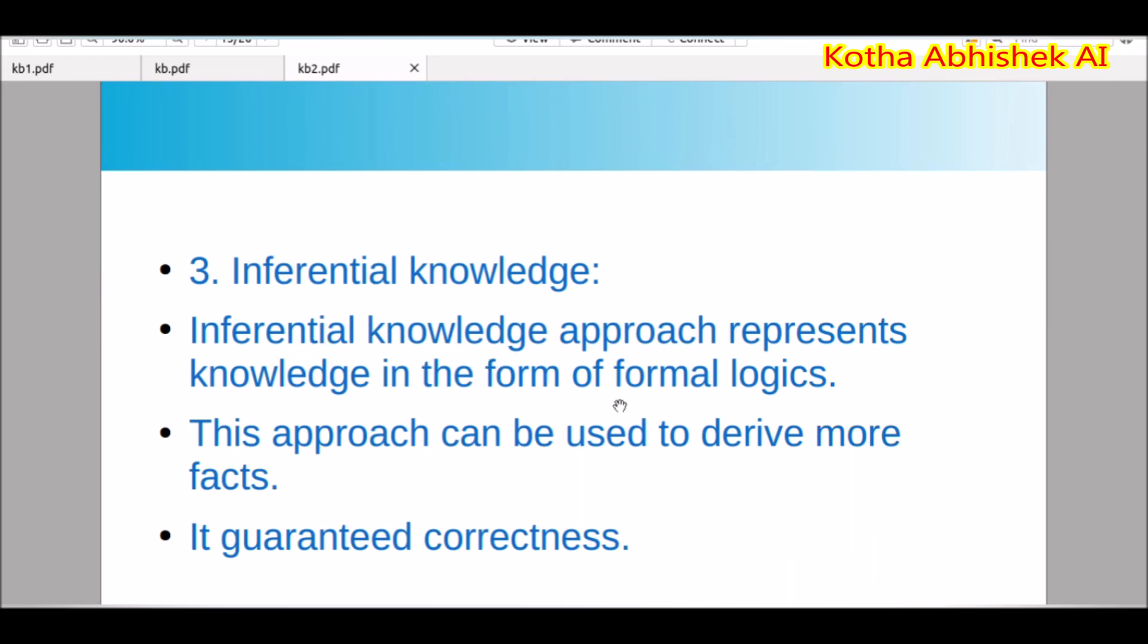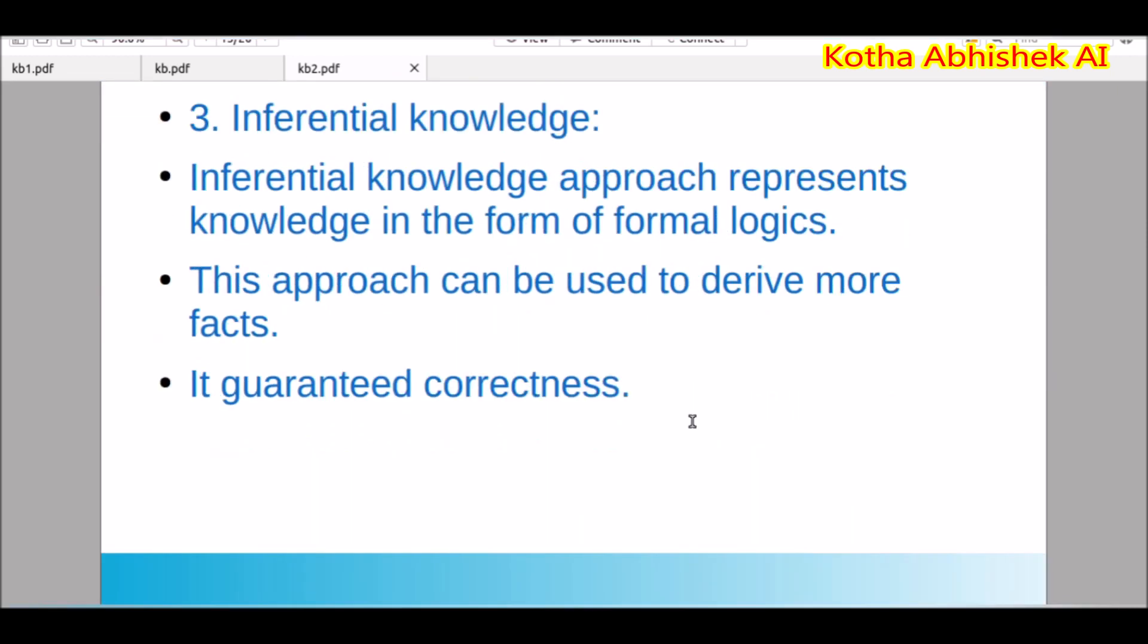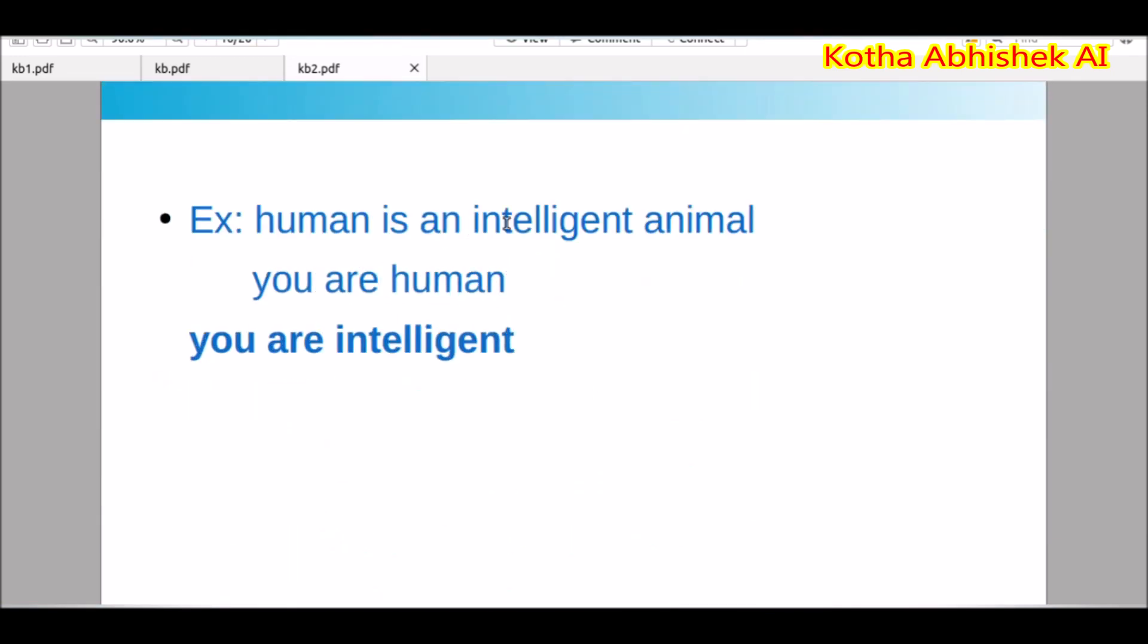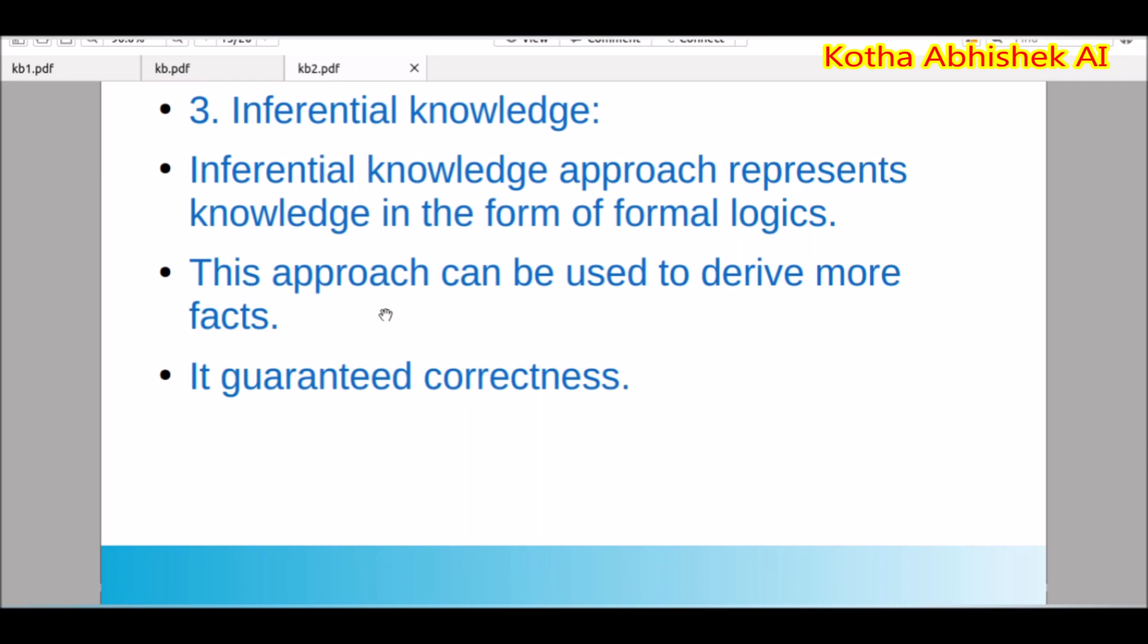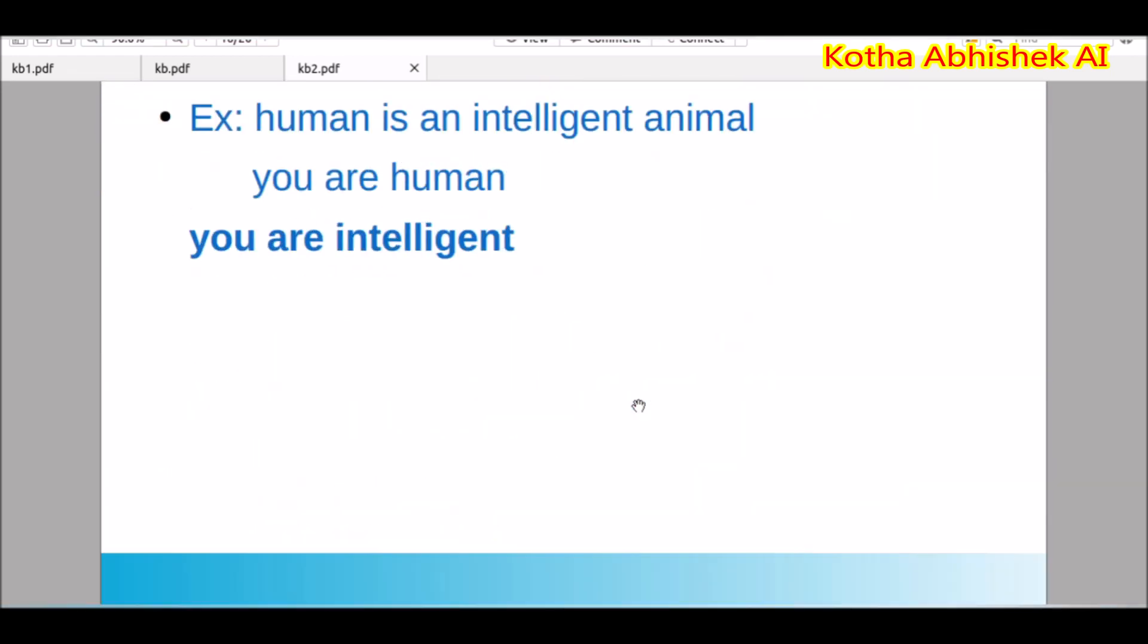Next one, inferential knowledge. Which has some logic and proof. For example, human is an intelligent animal. This is one fact. And second one is, you are human. What we can derive from this? That is, you are intelligent. So if every human is intelligent, and one is human, then it is intelligent. It has some logic. It is very 100% guaranteed. This is not wrong at all. Since it is following some logic, there is no chance of wrong inference. This approach can be used to derive more facts and it guarantees correctness. That is why we have logic.